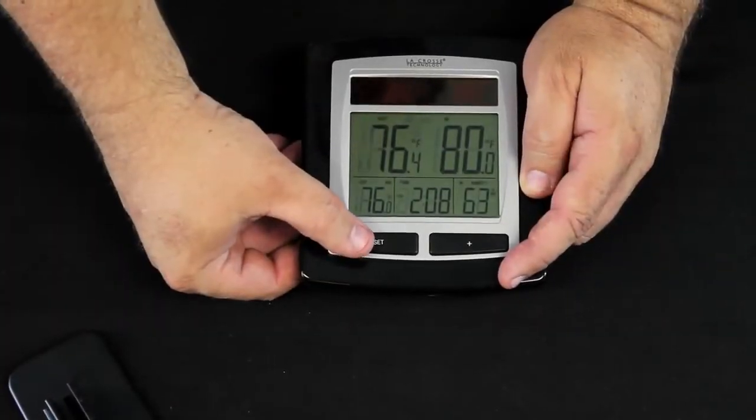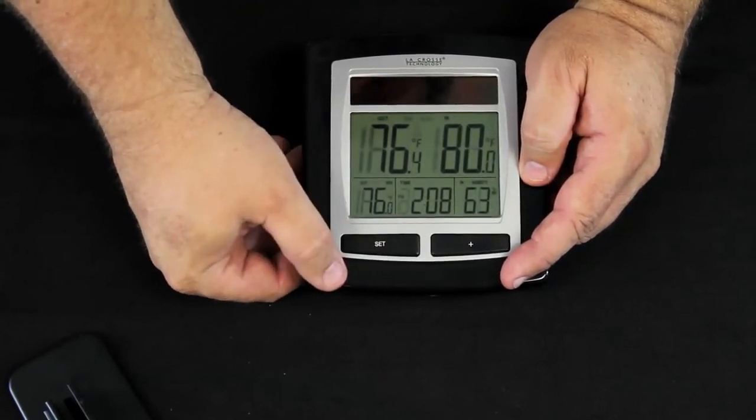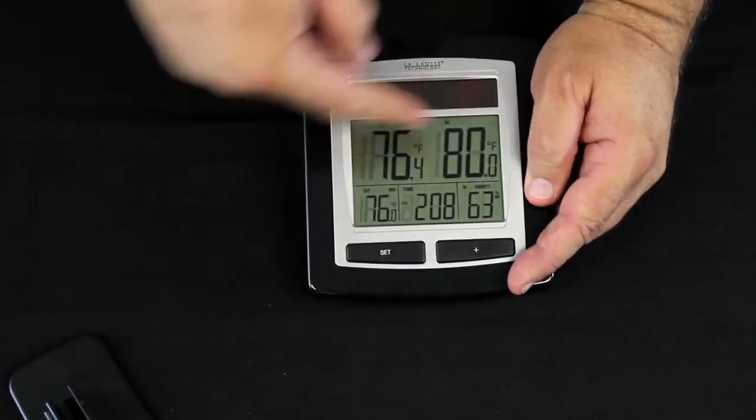By pressing the set button, we can simply change the way that the display is going to appear. And basically, we're moving the temperature and humidities around the display.